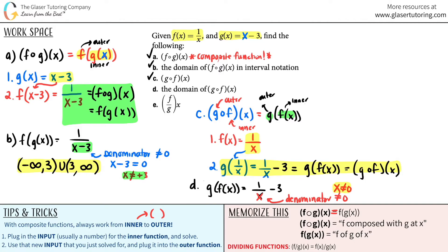Denominators can be negative, so I can go all the way to negative infinity. Denominators can be positive, so I can go all the way to positive infinity. I just can't include zero. So in interval notation: parenthesis, negative infinity to zero with a parenthesis to exclude it, union, then parenthesis from zero — excluding it — to positive infinity. That's the domain for g of f of x.